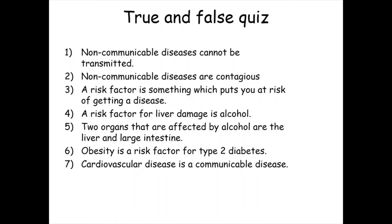Non-communicable diseases cannot be transmitted — that is TRUE. Non-communicable diseases are contagious — that is FALSE. A risk factor is something which puts you at risk of getting a disease — TRUE. A risk factor for liver damage is alcohol — TRUE; alcohol is also a risk factor for brain damage. Two organs affected by alcohol are the liver and large intestine — FALSE, because it's the liver and the brain.